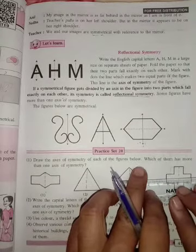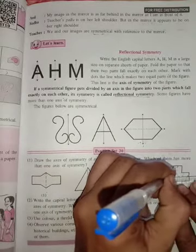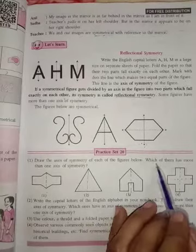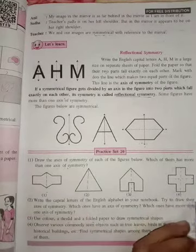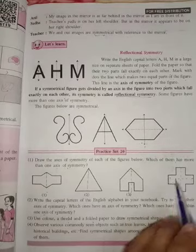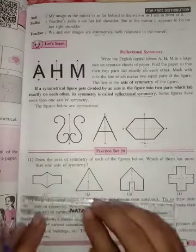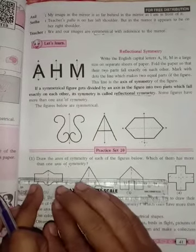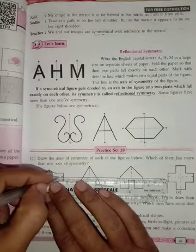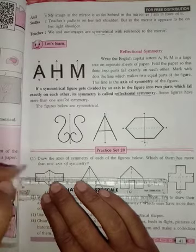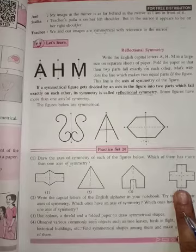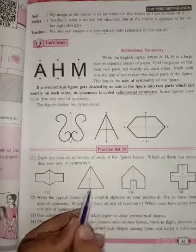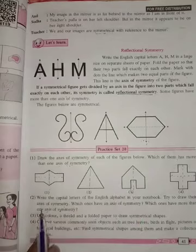Which of them has more than one axis of symmetry? Figure number four has more than one axis. You can say it is also axis of symmetry. If we divide it like that, we get the same. This is the axis of symmetry and this one and this one.